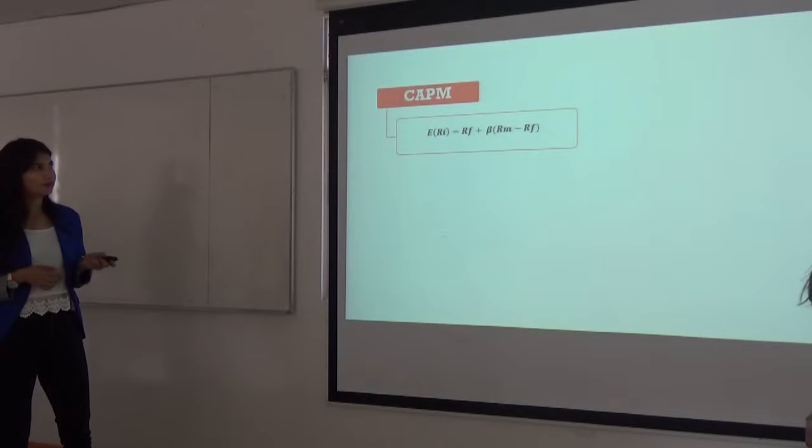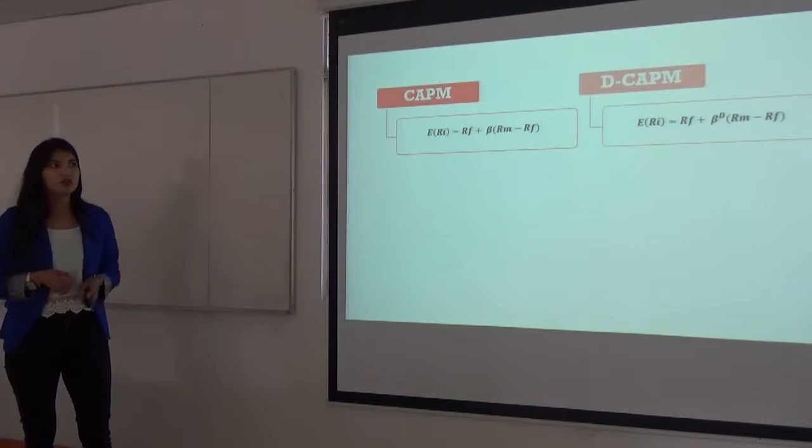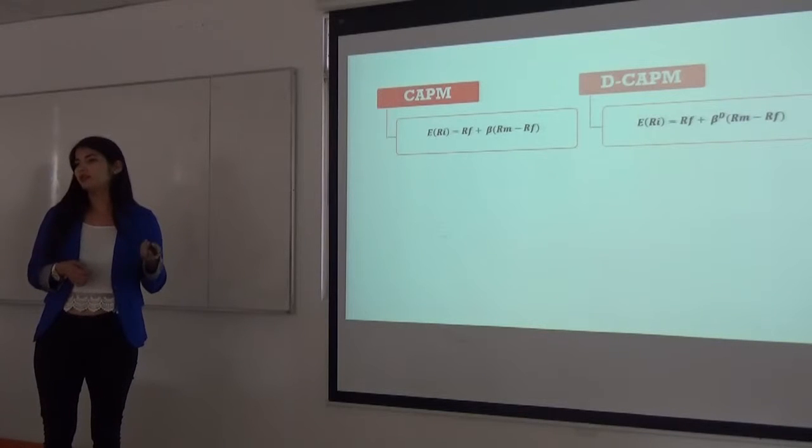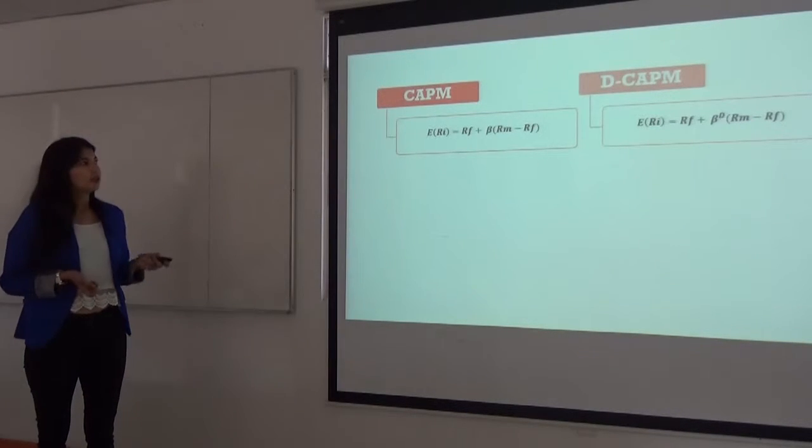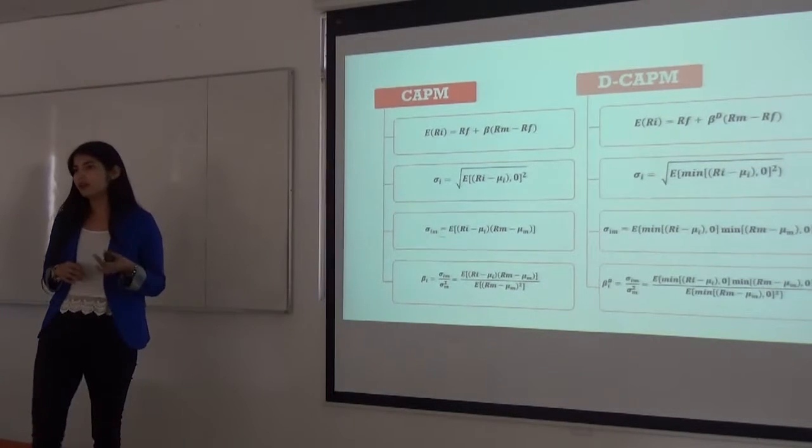So, as an alternative model emerges the DCAPM model which incorporates the biased distribution. And the only difference between both models is in the beta coefficient.